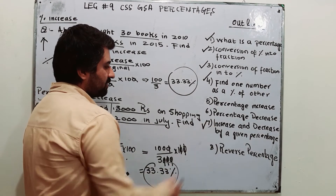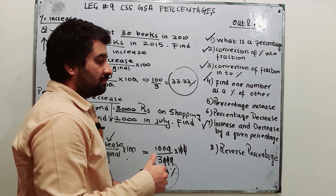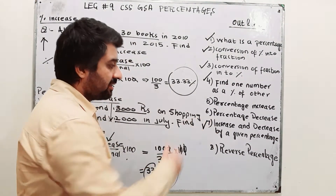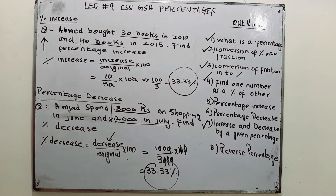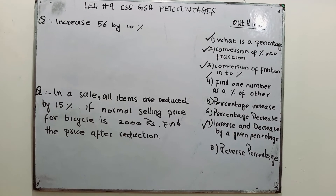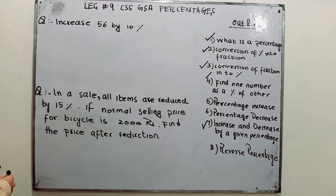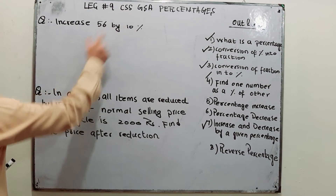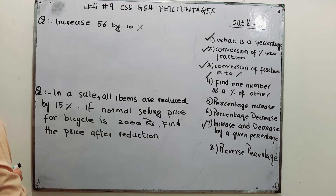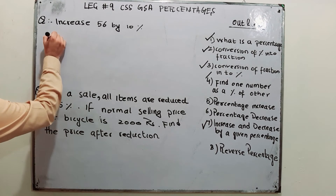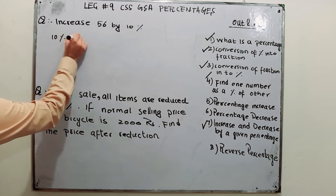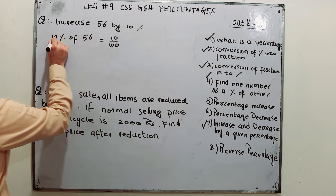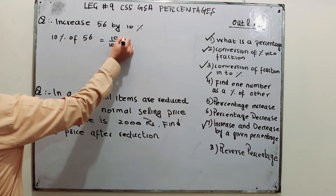Next is to increase or decrease a given quantity by a certain percentage, and then reverse percentage. For example, increase 56 by 10%. First, find 10% of 56: that is 10 over 100 multiplied by 56.